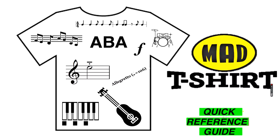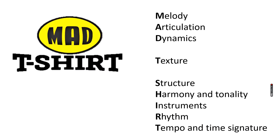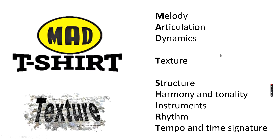Hello everyone and welcome to the quick reference guide to MAD T-SHIRT. MAD T-SHIRT is an acronym to help us work out the elements of music, as you can see all down the side. Each letter means an element of music, and today we're going to be looking at texture.